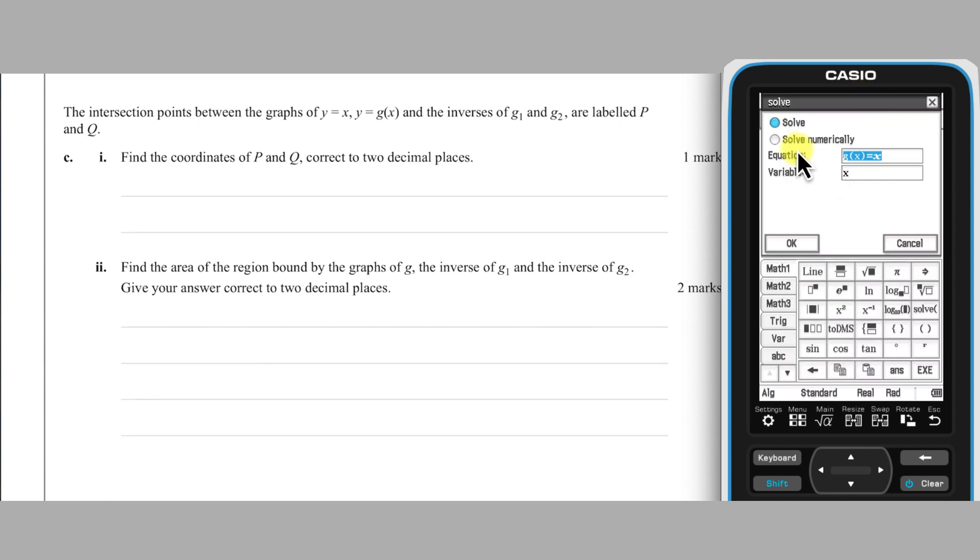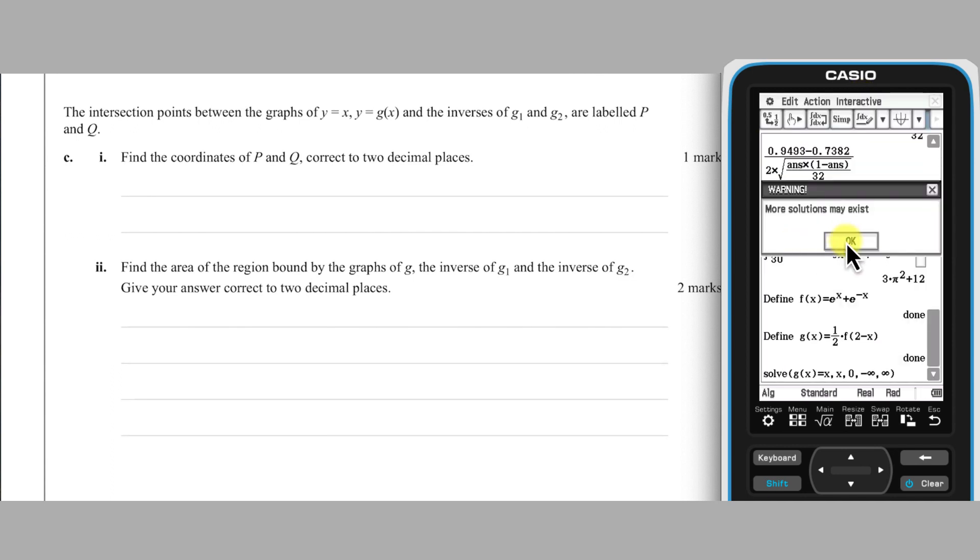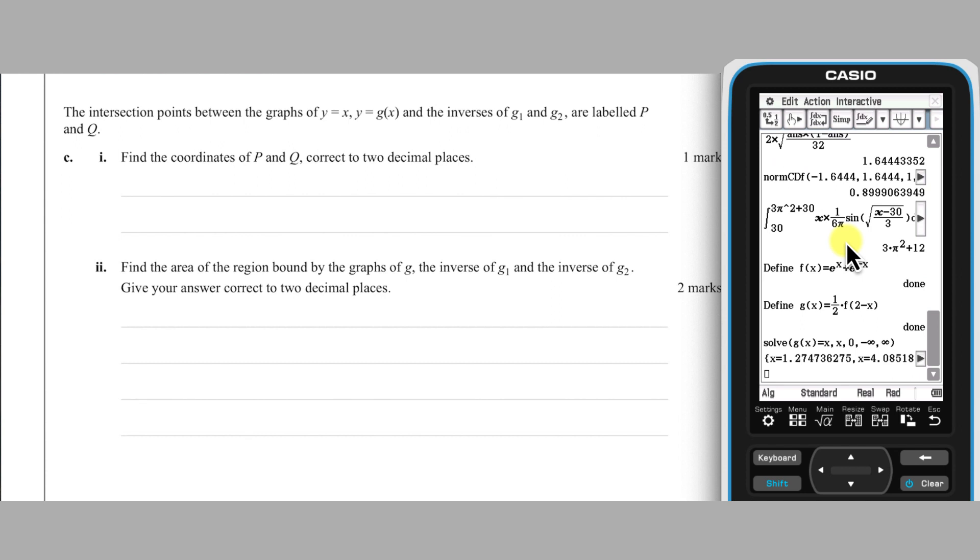I'm going to ask for a numerical solution as we are asked for answers to two decimal places. Whilst it seems like this solution only provides the X coordinates of points P and Q, as these points lie on the line Y equals X, these values are also the Y coordinates.